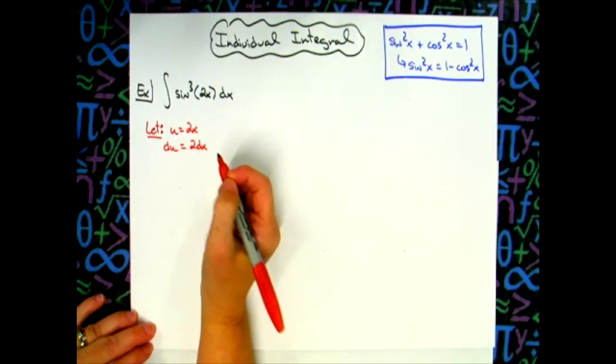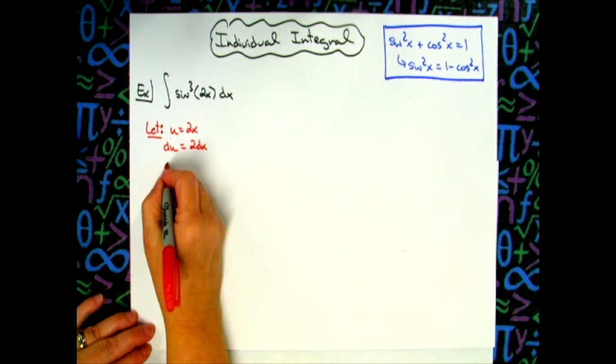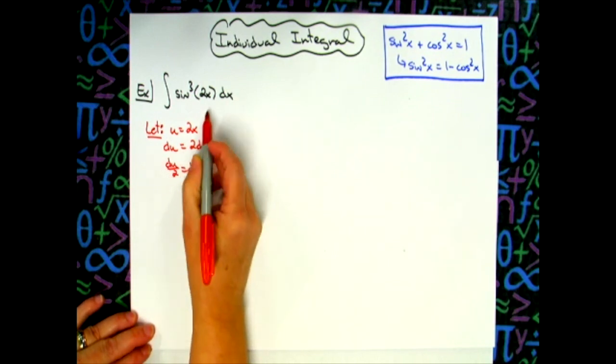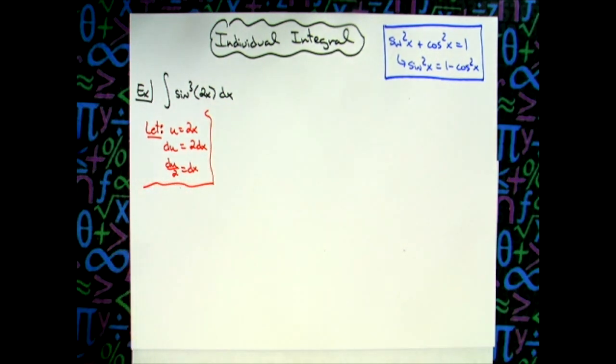And then I am going to go ahead and solve all the way down for that dx. We'll divide both sides by 2. So du over 2. Then we're going to come back up to that original integral and we're going to do our substitutions now.